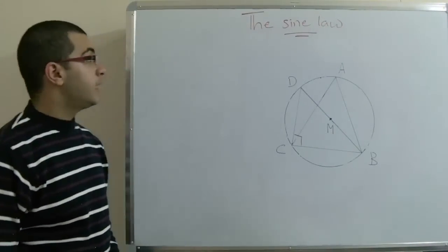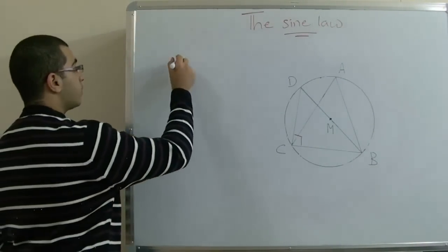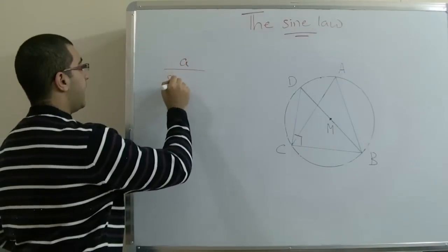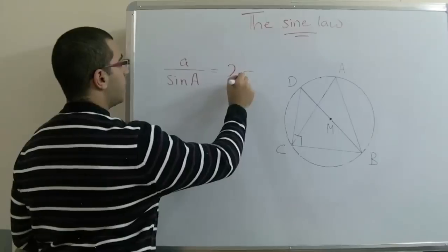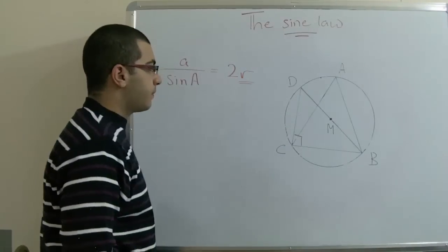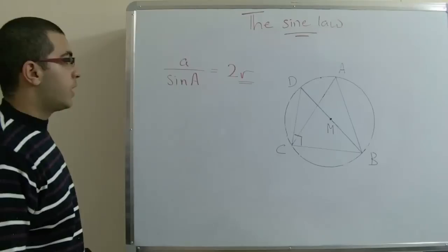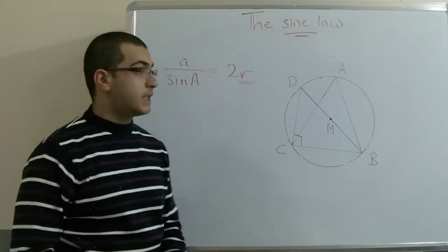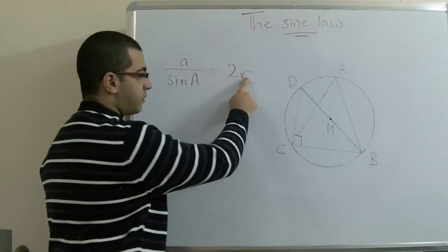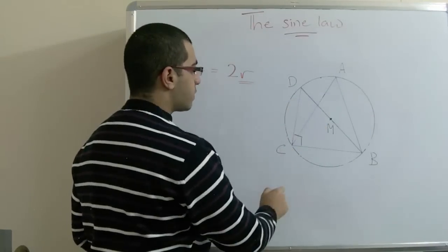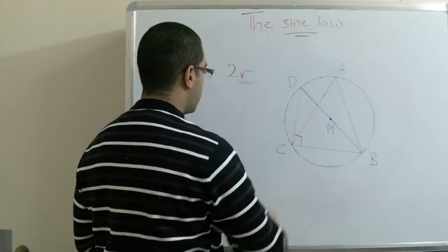Hello everybody and welcome back. Today we will prove that the sine law, which is expressed as a over sine A equals 2R, by another method different from the one we made in the last video. Here, R refers to the radius of the circumcircle which surrounds the triangle that we are dealing with.